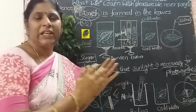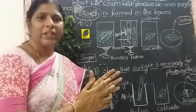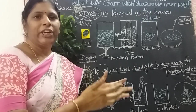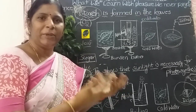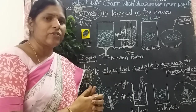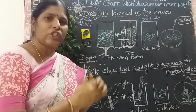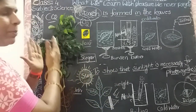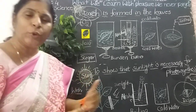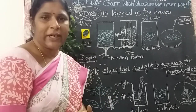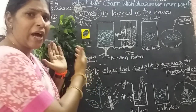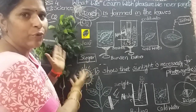Some plants store food in the leaves, like cabbage. Some plants store extra food in flowers, like broccoli and cauliflower. We eat many fruits — plants store extra food in roots, fruits. All fruits are also rich in starch. Starch is formed during the process of photosynthesis. All green leaves contain starch.